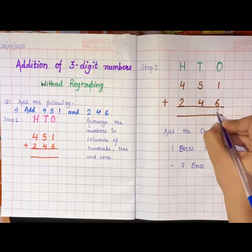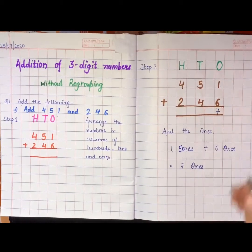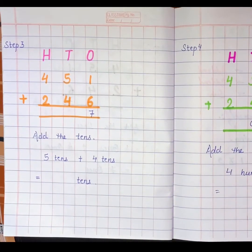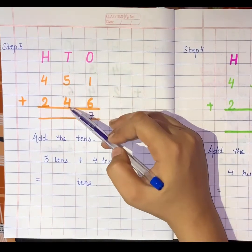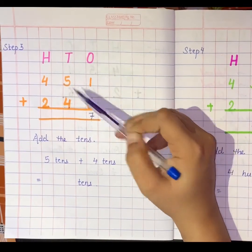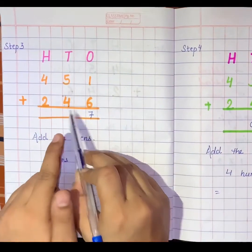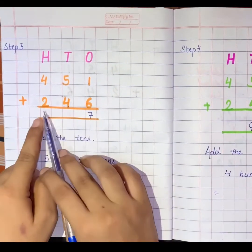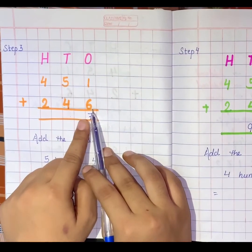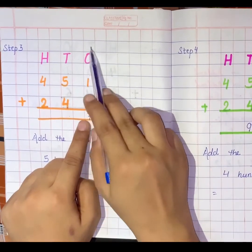My third step will be: add the tens. After adding the ones I got 7. Now I will add the tens place. I have started from the ones place — when we add, we should always start from the ones place.